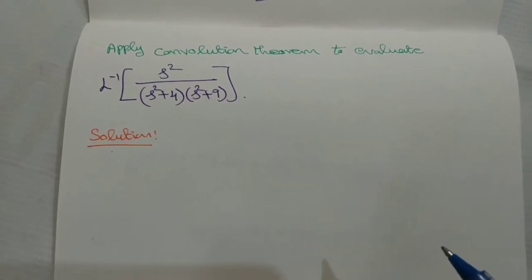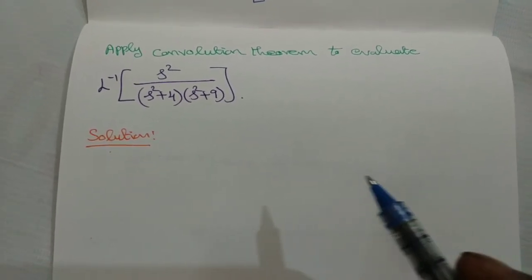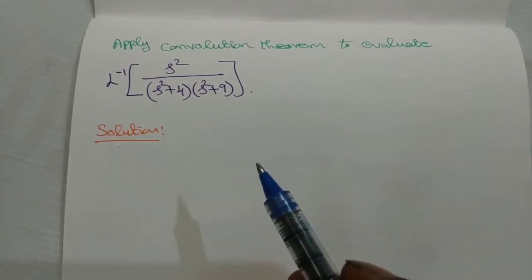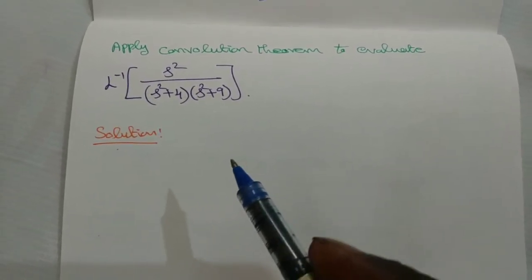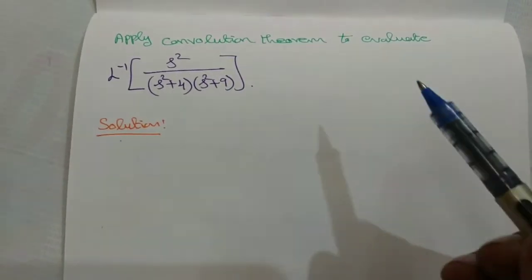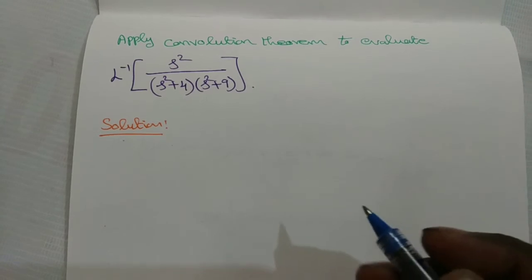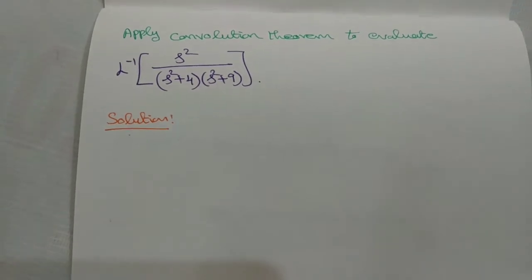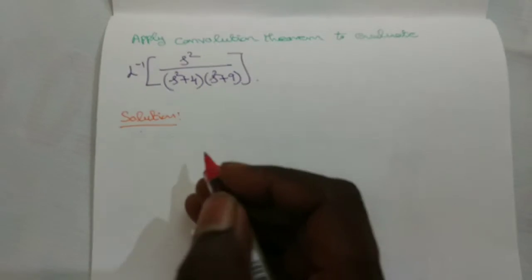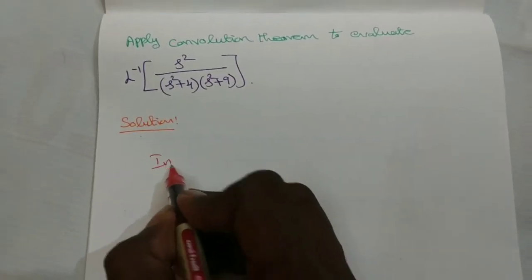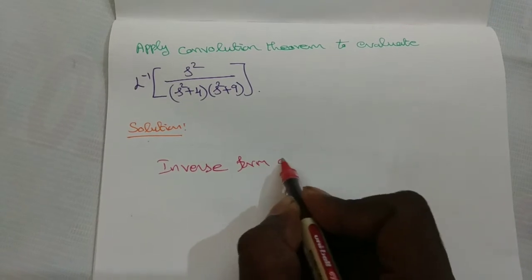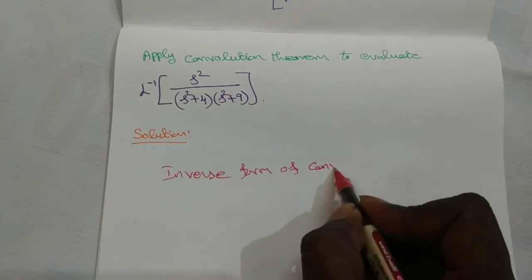Apply convolution theorem to evaluate L inverse of s squared by (s squared plus 4) into (s squared plus 9). To find the inverse Laplace transform we have to apply the convolution theorem. First we write the inverse form of the convolution theorem.